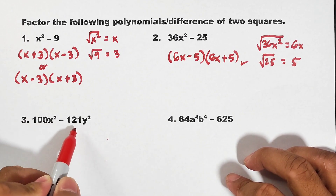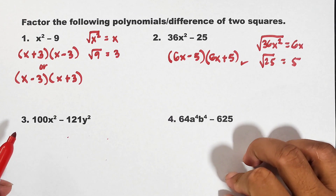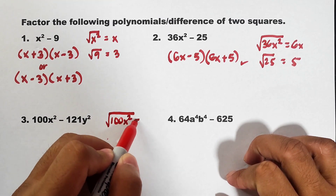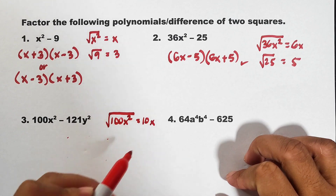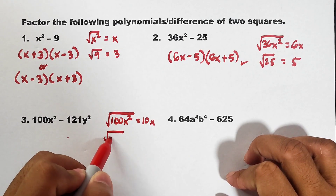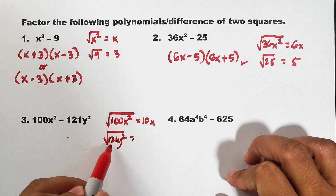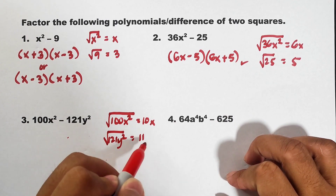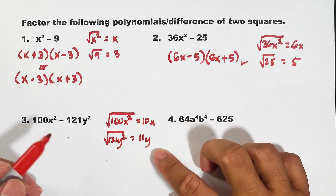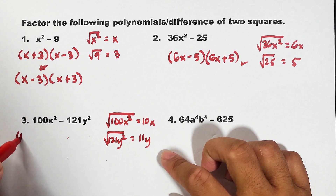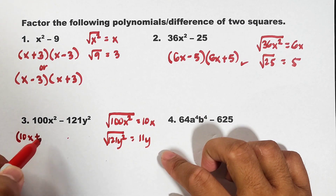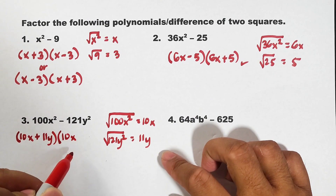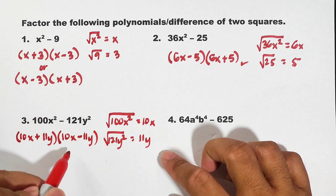100x squared is a perfect square, as well as 121y squared. So let's break it down. The square root of 100x squared is 10x. The square root of 121 is 11, and the square root of y squared is y, so the second term is 11y. Therefore the factors are 10x plus 11y times 10x minus 11y. These are the factors of 100x squared minus 121y squared.